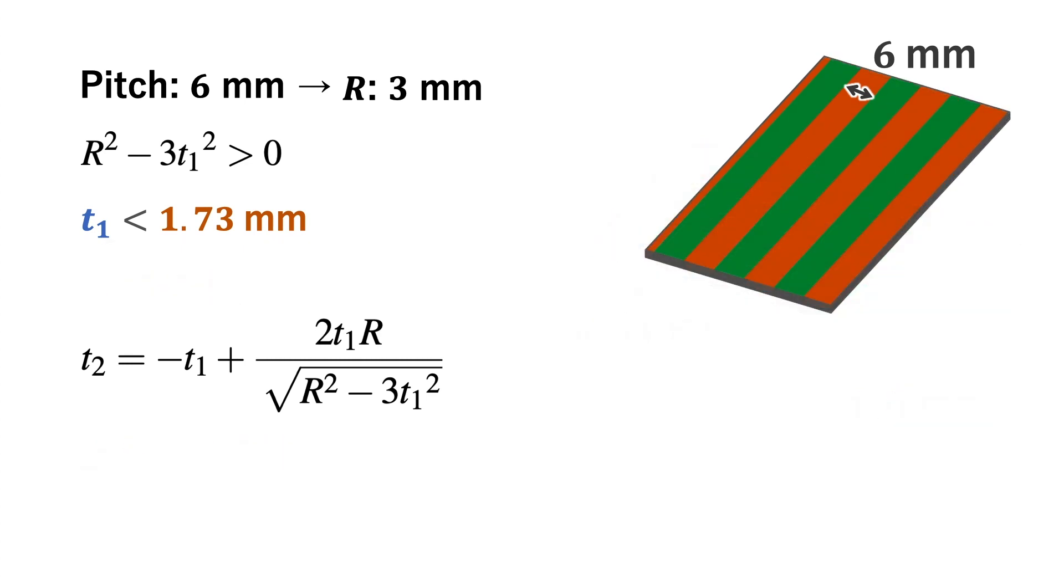However, the magnetic flux density increases with thickness. If we want a more powerful force feedback and choose a 1.73mm thick magnetic sheet as the upper sheet, the lower magnetic sheet should be 69.3mm.